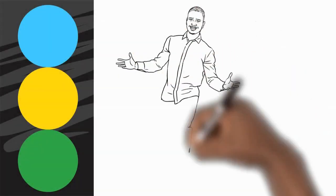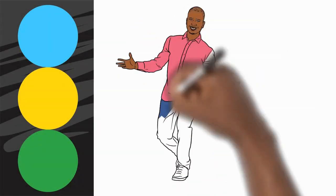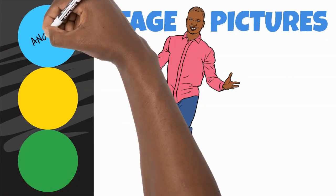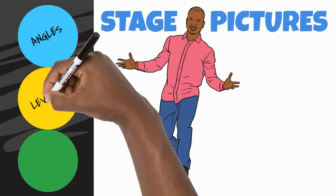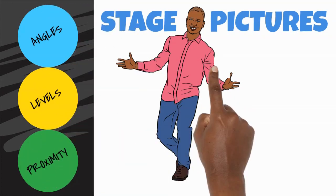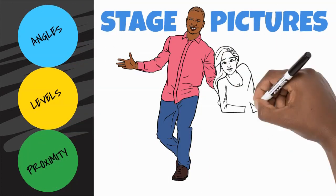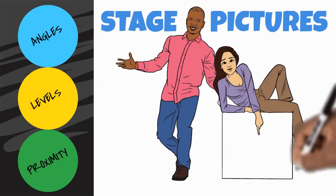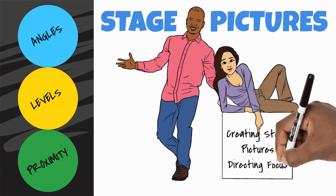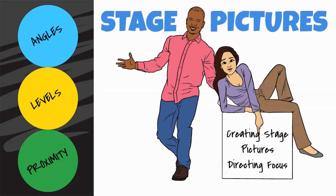So, we've talked about the three elements that make up a stage picture: angles, levels, and proximity. And discussed how the use of tight stage pictures can help to direct focus on the stage.